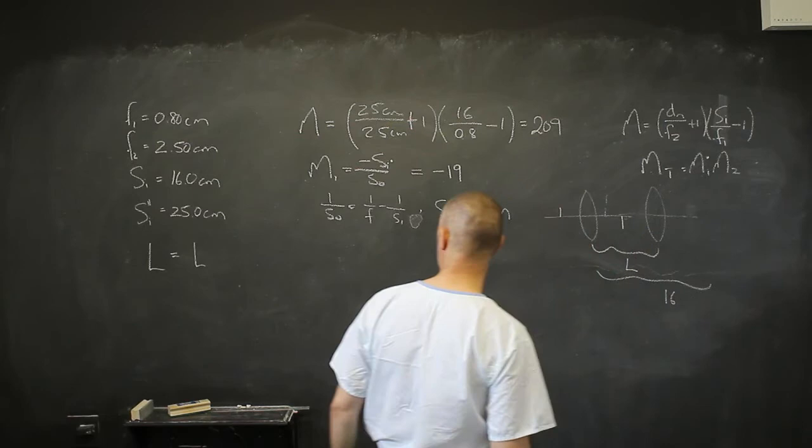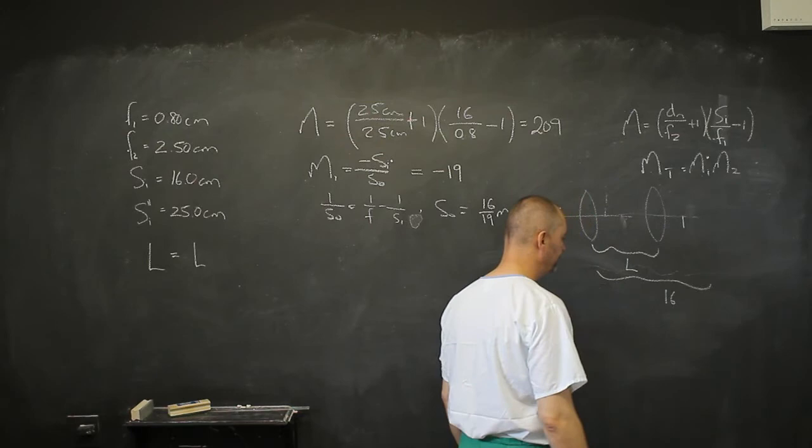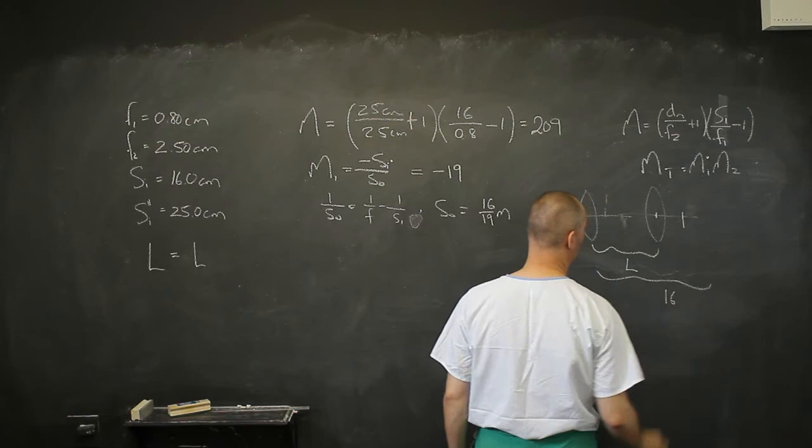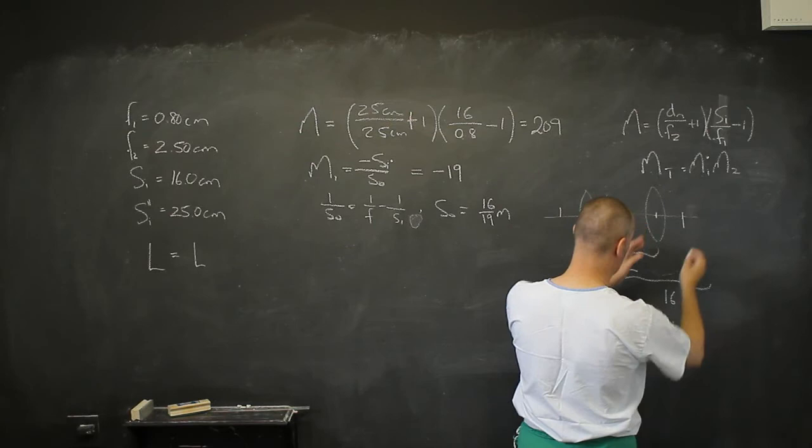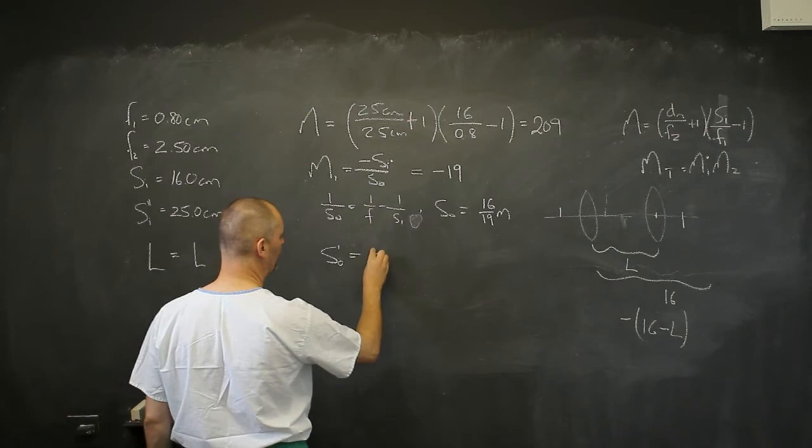So what we're looking at, and this image is probably not going to form there, but say for instance, somewhere there. Now this distance here, then between this lens and our object is going to be 16 minus L, but it's on the negative side, so I have to put a negative there, that gives me L minus 16. L minus 16 for my new S0.